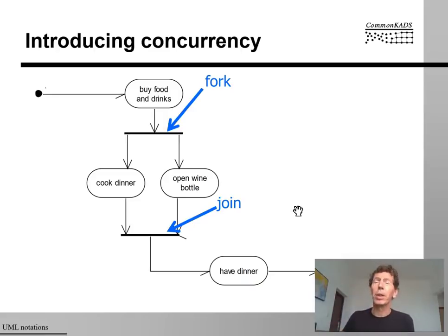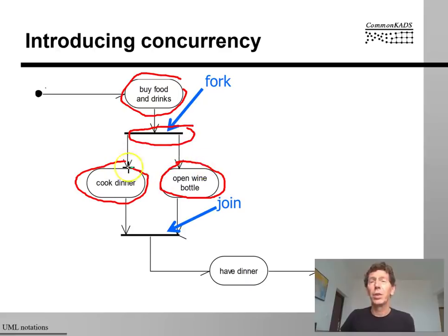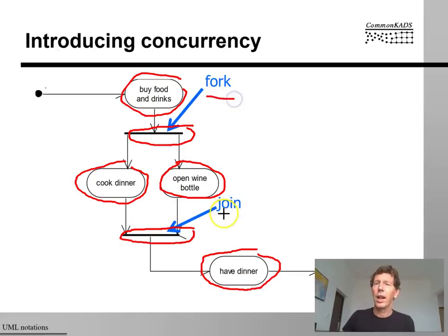Well, we can also have processes that happen concurrently. So, for example, suppose that you're cooking your dinner. Then your first activity is to buy food and drinks. And then you're going to do two things. You're going to cook the dinner. And while you're cooking the dinner, you're actually already having a drink with your friends. And those two happen in parallel. And this is described by the forking construction. And after two processes run in parallel, they can be synchronized again so that the next process happens after both of the parallel processes have finished. So a fork and a join.